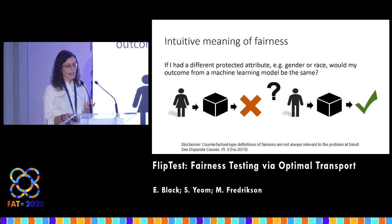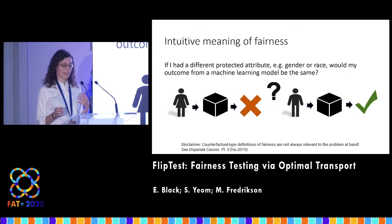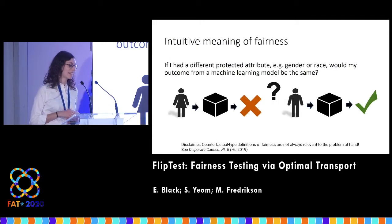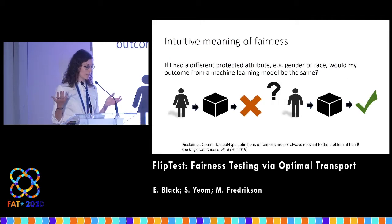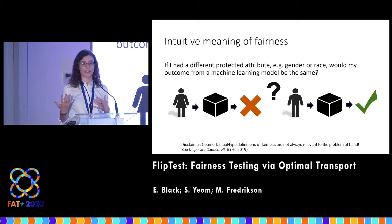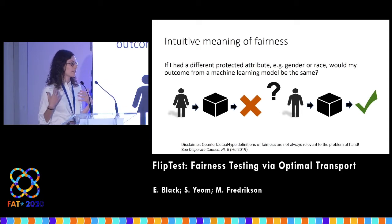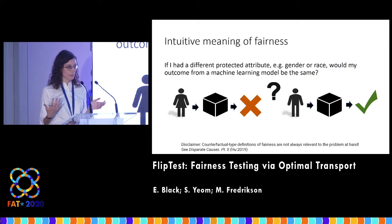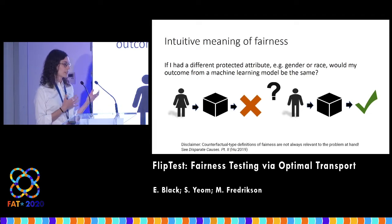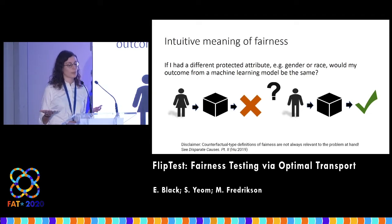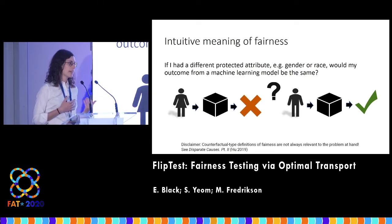But how do we test a model for unfairness? How do we determine if a model is acting in an unfair way? One intuitive way of thinking about this is: if you had a different protected attribute, like a different race or gender, you should be treated in the same way by the model.